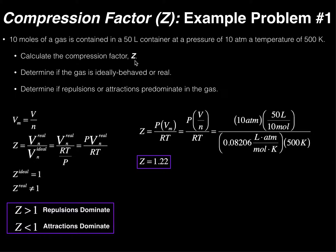Z equals the pressure of the gas times the real molar volume divided by RT. The molar volume is the volume of the container divided by the number of moles. So the pressure is 10 atmospheres, volume is 50 liters divided by 10 moles. In the denominator we use R = 0.08206 L·atm/mol·K, since pressure is in atmospheres and volume is in liters, and temperature is 500 Kelvin.